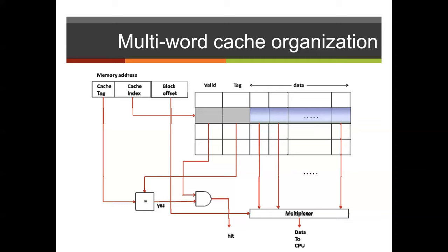For a read, we bring in an entire block from the cache index, then use tag comparison to determine if we have a hit. The multiplexer selects the block needed and sends it to the CPU. If we have a miss, the CPU initiates transferring the block from memory. Upon a write, we modify our write algorithm so there is only one valid bit used for the entire cache line.